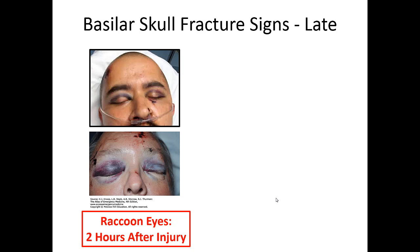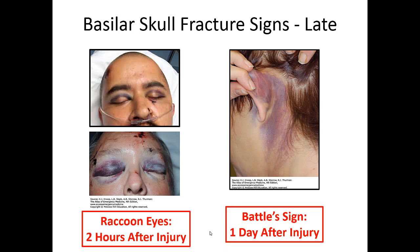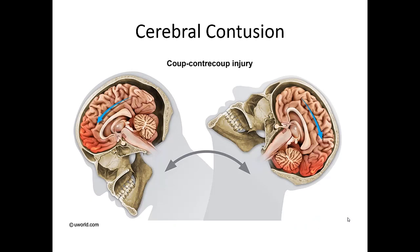Late signs of basilar skull fractures include raccoon eyes, which tend to develop two to four hours after injury. If called to a scene late after an assault or fall, a patient presenting with raccoon eyes warrants high suspicion for basilar skull fracture. Look for eyelid sparing — the ecchymosis collects around the eyes but spares the eyelid itself, which can suggest intracranial involvement. Battle's sign is a much later sign, appearing about a day later as blood from the base of the skull pools behind the ears — sometimes seen in non-accidental trauma in children.